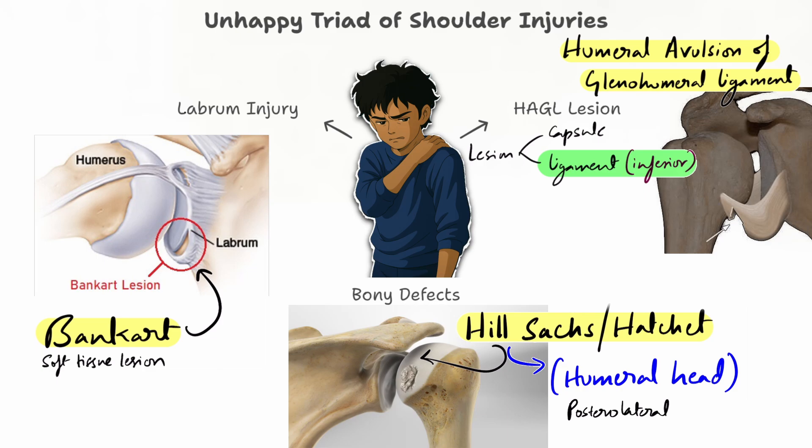Because of this dislocation, there can also be injury to other structures such as the axillary artery and the rotator cuff muscles.